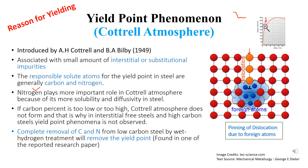In one reported study, it was found that if you can completely remove these interstitial impurities by some method — for example, using wet hydrogen treatment for complete removal of carbon and nitrogen atoms — then you can remove the formation of the yield point in the stress and strain diagram. In summary, the pinning of dislocations due to interstitial impurity atoms is the reason for the formation of the yield point, marking the upper yield point; and after sufficient stress is applied, strain is produced at a much lower stress value, which is the lower yield point. This was all about the yield point phenomenon.